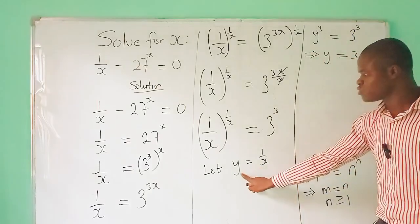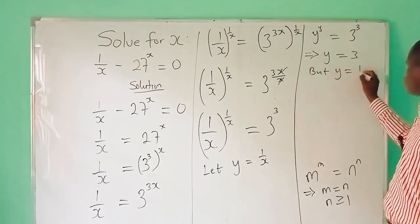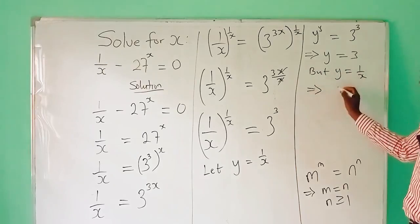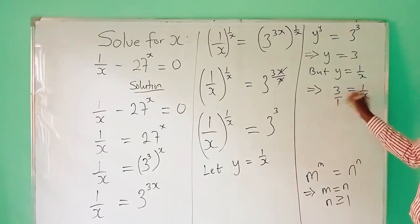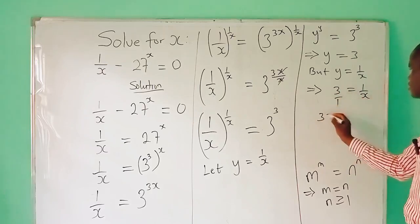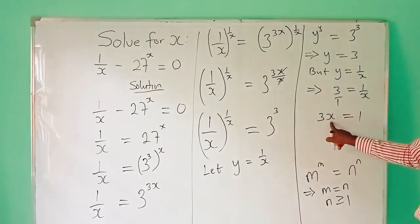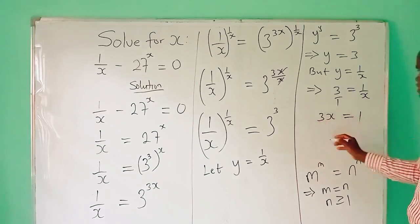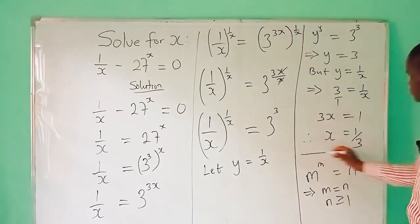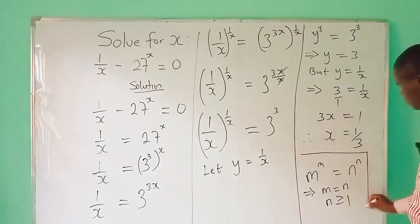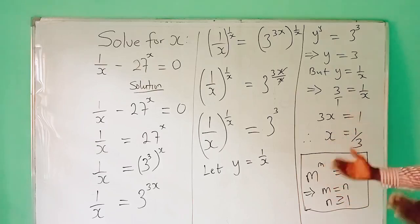But remember that y is equal to 1 over x. So y equals 1 over x, which means 3 is equal to 1 over x. Making x the subject, I will cross multiply: 3 times x gives us 3x, and 1 times 1 gives us 1. Making x stand alone, I divide both sides by 3. Therefore, x is equal to 1 divided by 3.